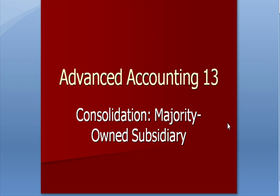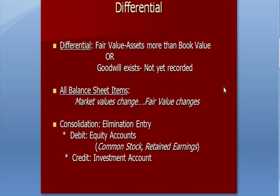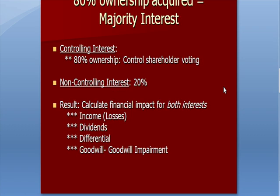Advanced Accounting 13: Consolidation with Majority-Owned Subsidiary. This is Ken Boyd with the Order of St. Louis Test Preparation. This information was taken from the Advanced Accounting text from McGraw-Hill Chapter 5. We talked about differential consolidation and the fact that we need elimination entries for consolidation, using an example of 80% ownership — Levi's jean company buying Hollywood Jeans.